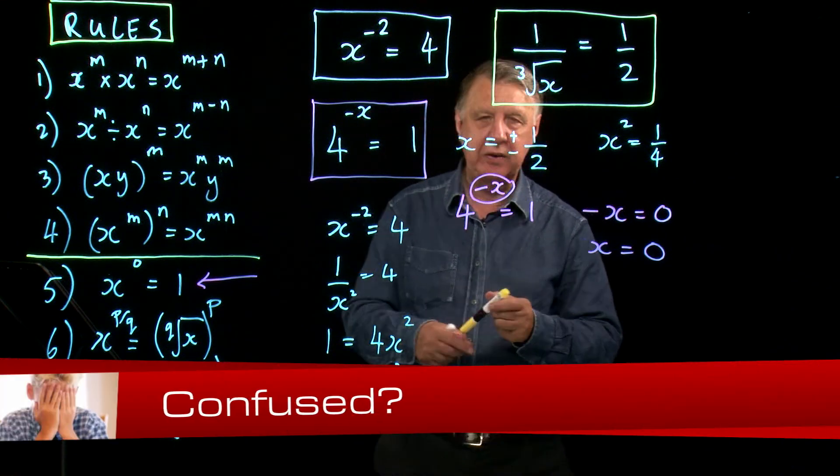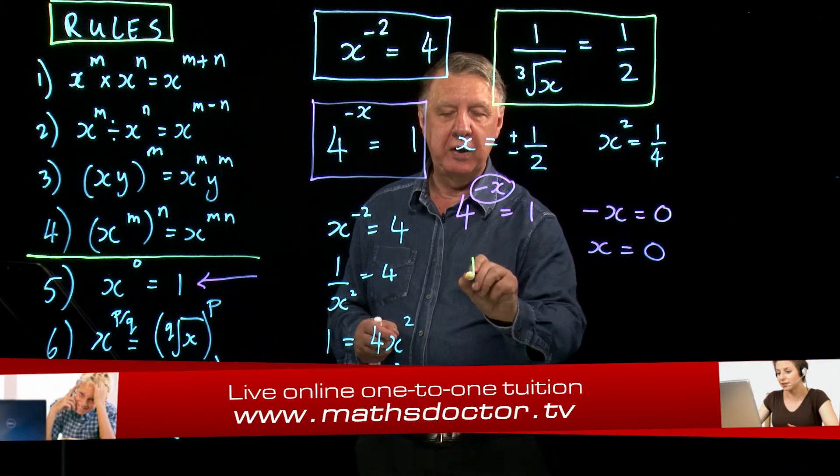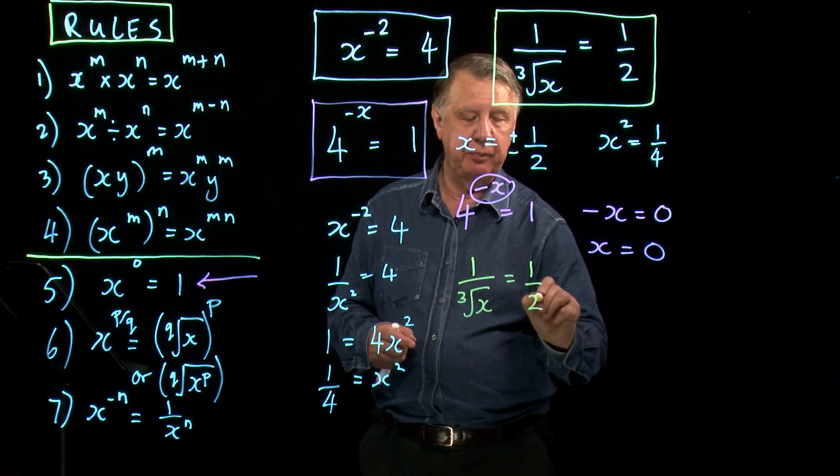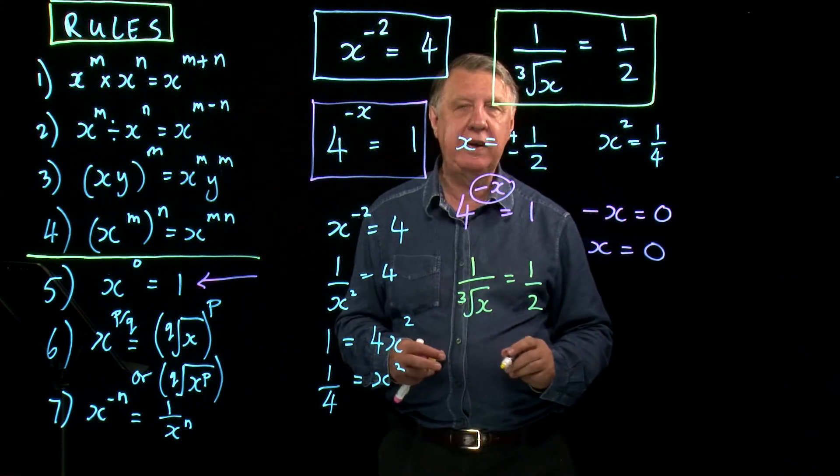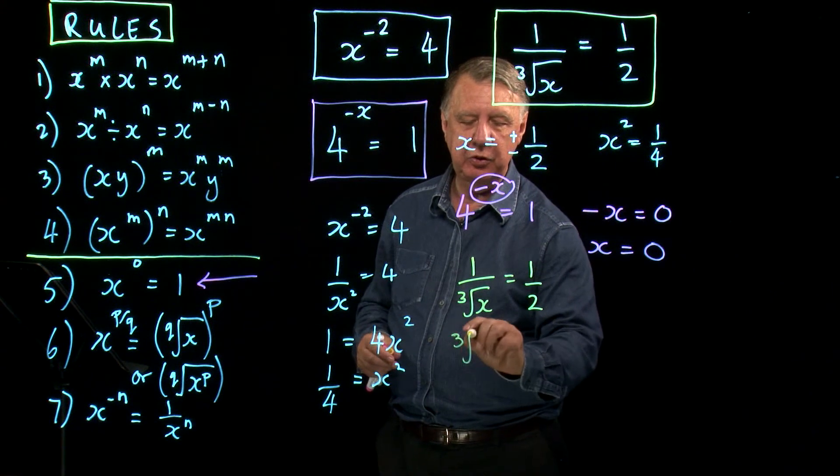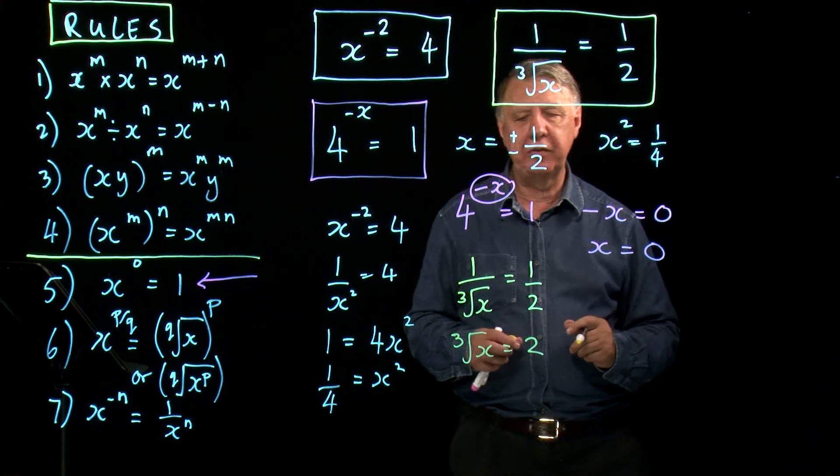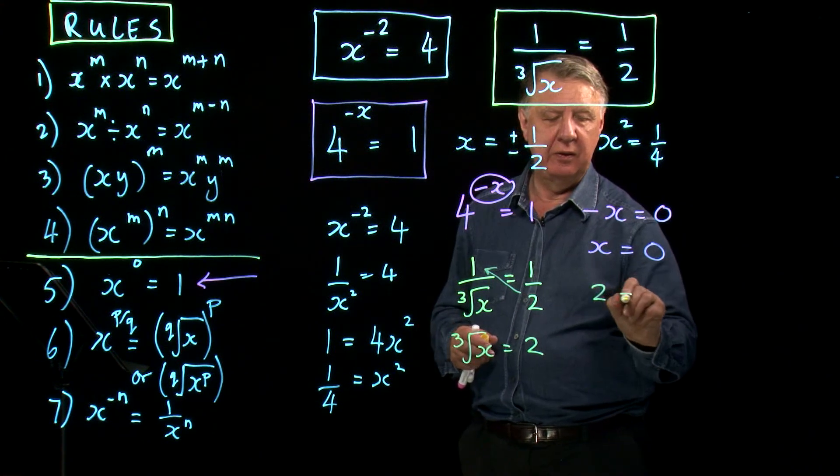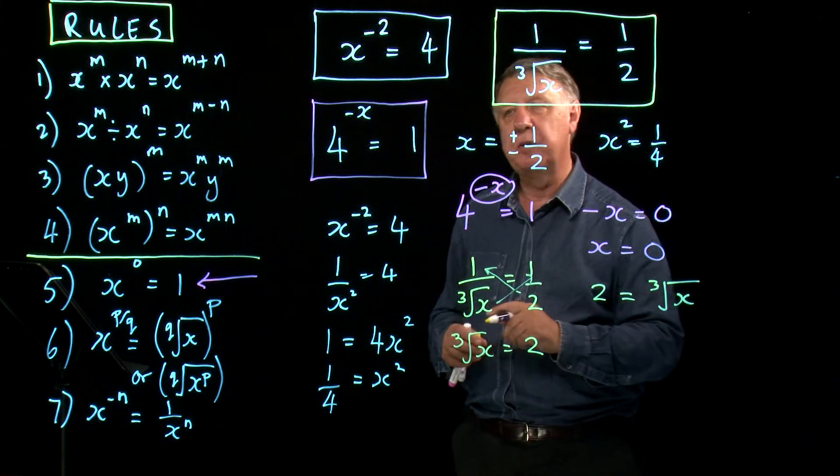And then finally let's go to the yellow equation. Now this is a little bit more tricky. 1 over the cube root of x equals a half. If you're confident you'd be very happy to turn both of those upside down and say the cube root of x equals 2. If you weren't so confident you'd probably want to do 2 times 1 and the cube root of x times 1. So you end up with the same thing but written the other way around.